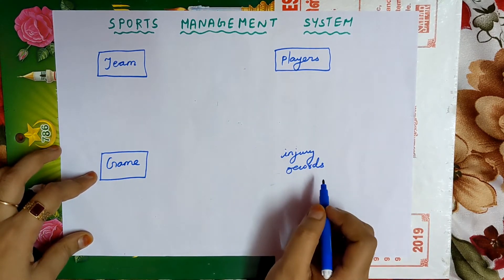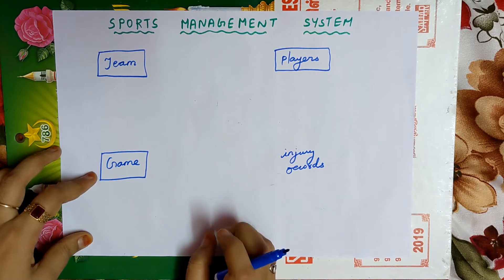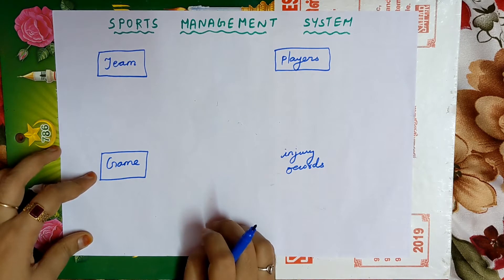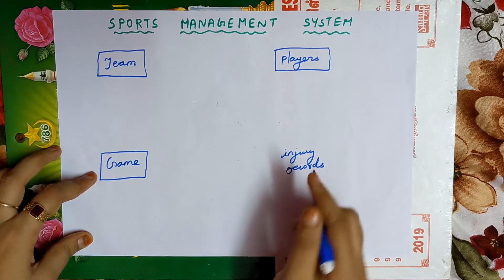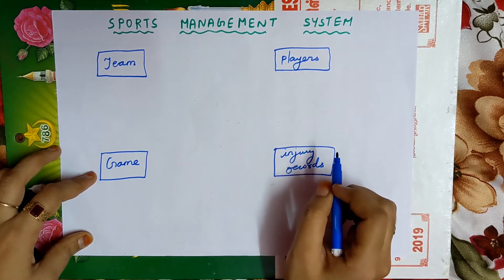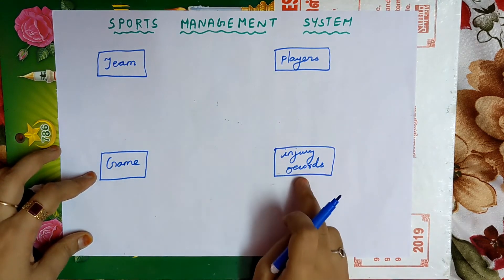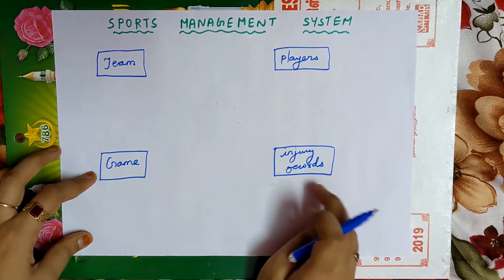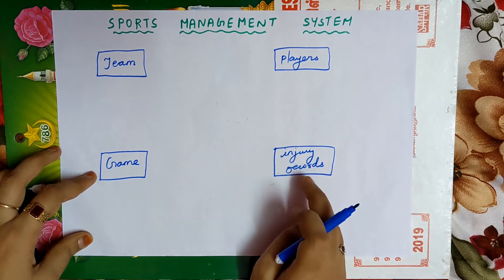Injury records is an entity because it is physically existing — you will be maintaining records in a notebook or record book, which you can touch. Therefore it is an entity and must be written inside a rectangular box. So totally there are four entities: team, players, game, and injury records.